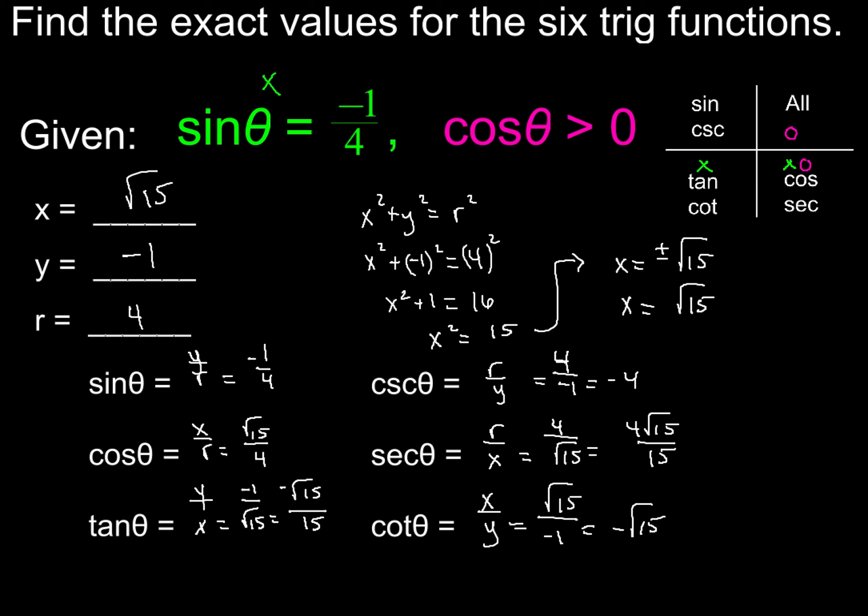All right, so how'd you guys do with this one? Did you get negative 1 fourth for sine, root 15 over 4 for cosine, tangent ends up being negative root 15 over 15 when you rationalize, cosecant is negative 4, and secant is 4 roots of 15 over 15, and cotangent is negative square root of 15. Hopefully, you got all six of those right. But wait, we've got one more example, so let's go ahead and try this one.